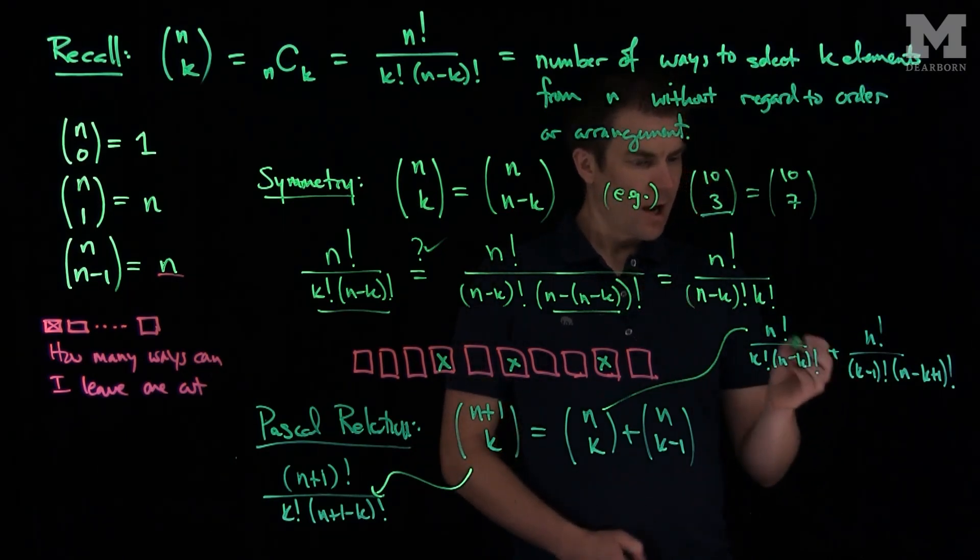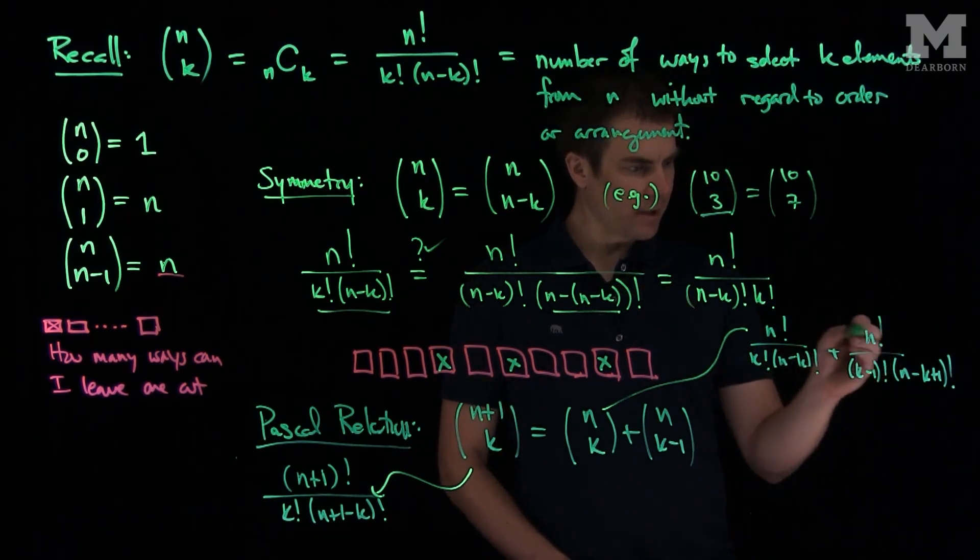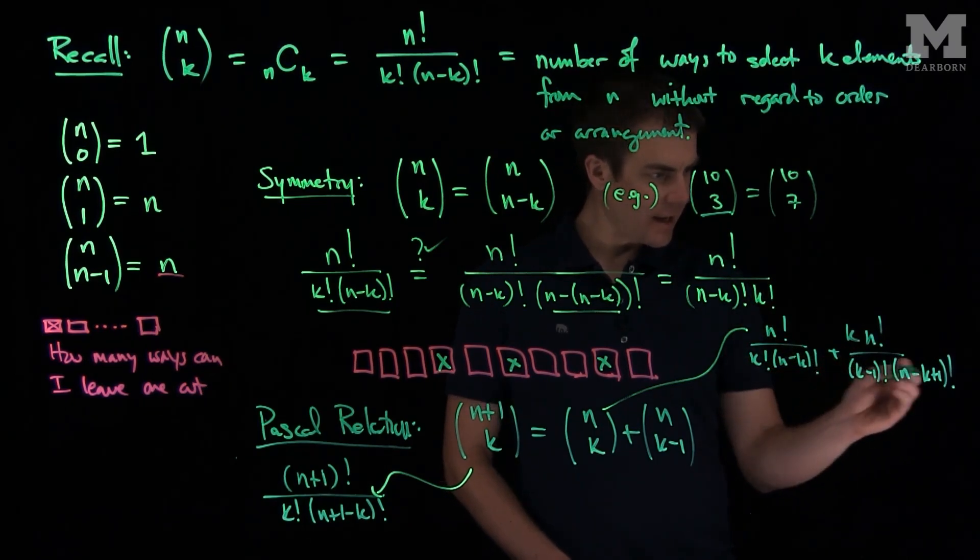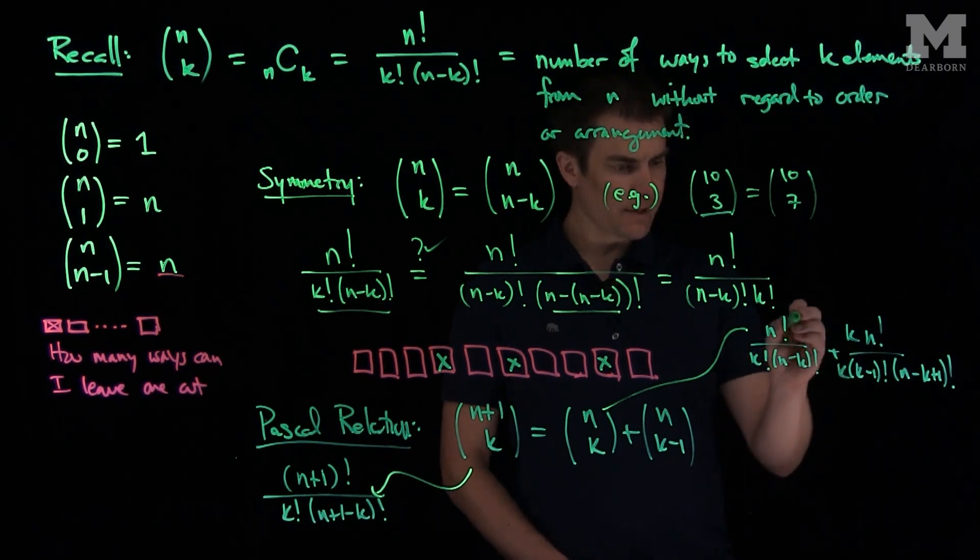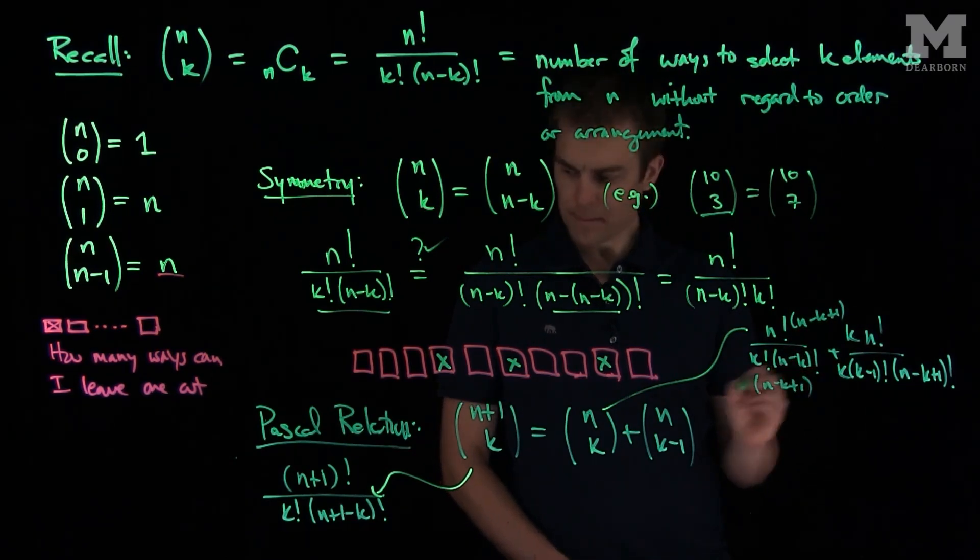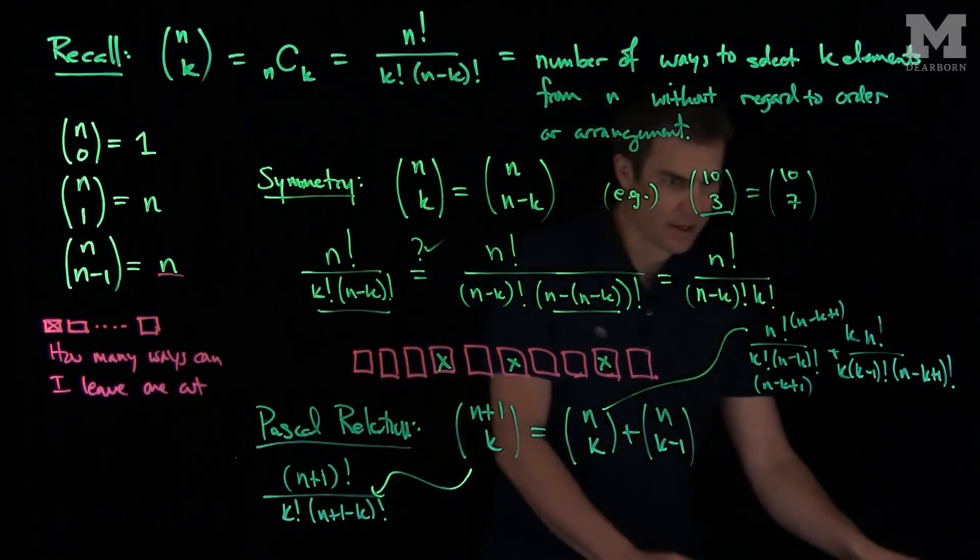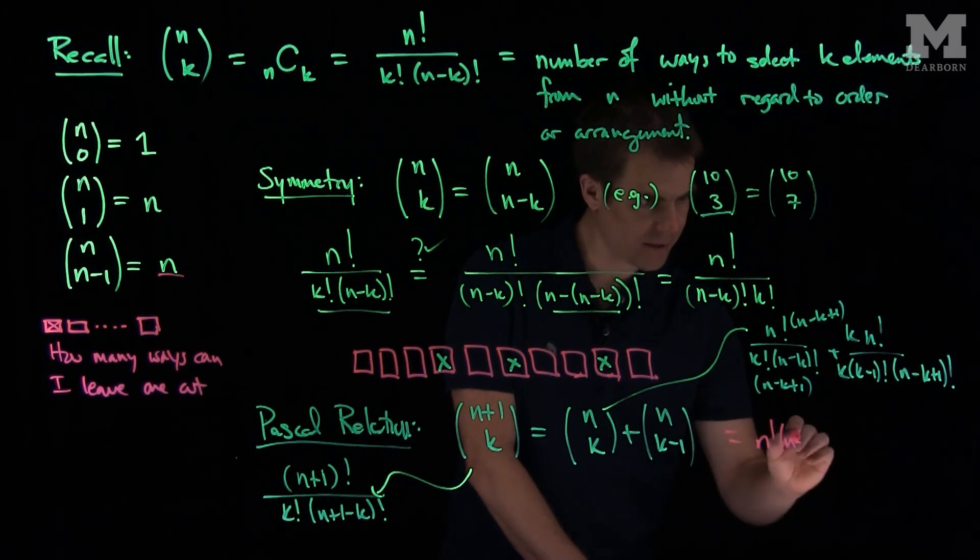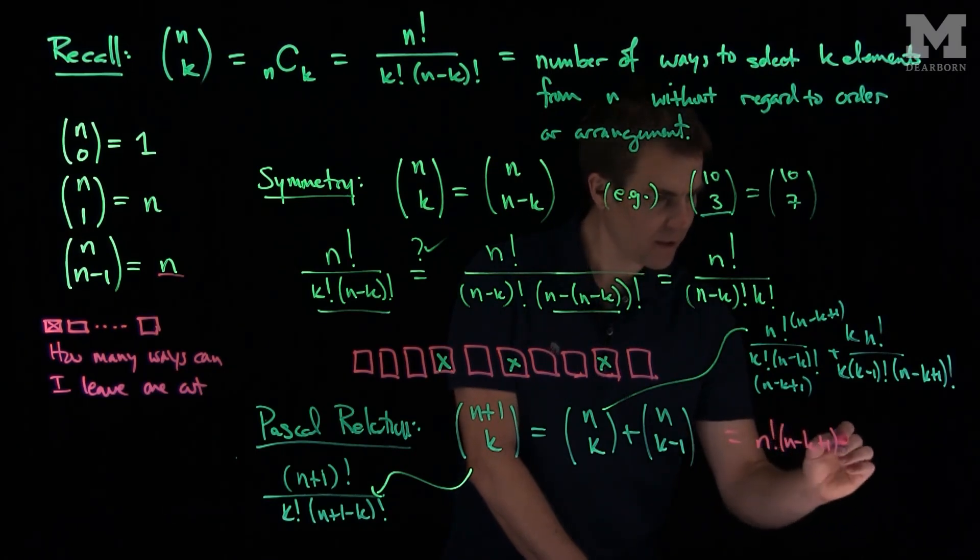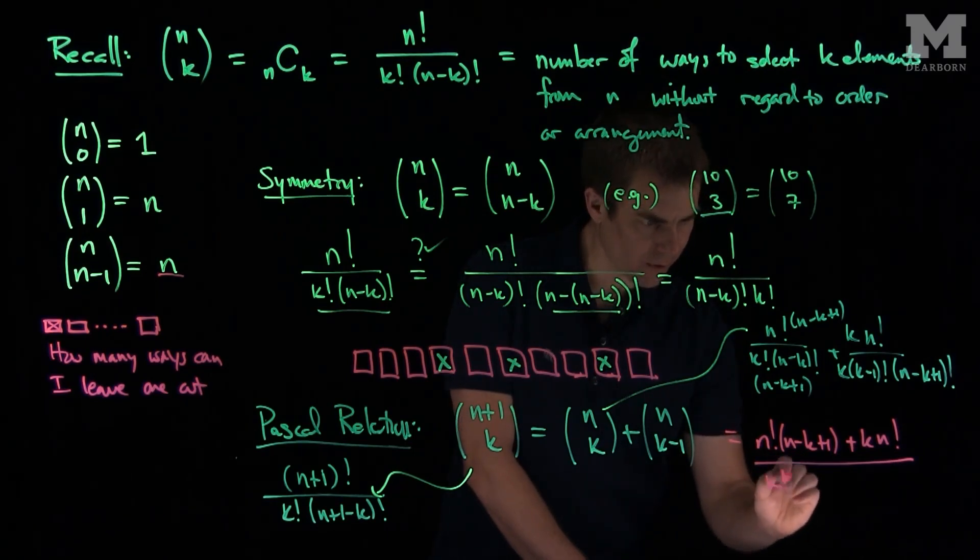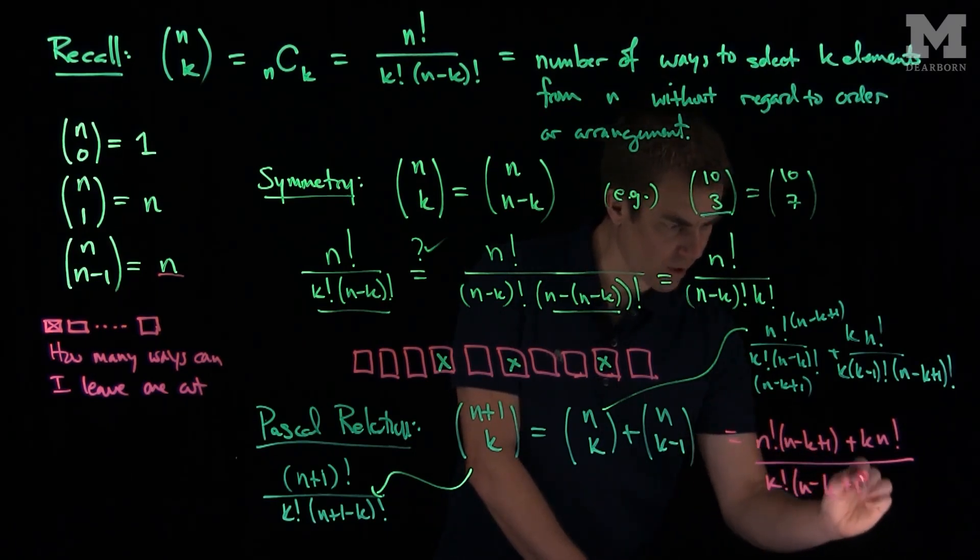I will put a k over here, and then I'll add a k in the denominator. And what I'll do over here is add in an (n-k+1) on top and then (n-k+1) on the bottom. And then what we see is now we have a common denominator, and so this will be equal to n factorial times (n-k+1) plus k times n factorial over k factorial times (n-k+1) factorial.